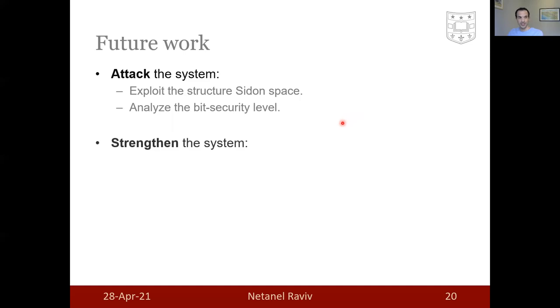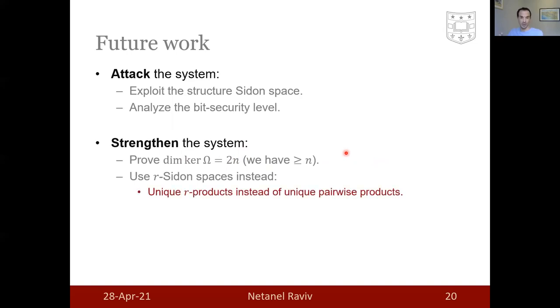Another venue, which we have a few suggestions, is to strengthen the system. First of all, to understand where these extra n dimensions in the kernel are coming from. Second, is to use a generalization of Sidon space, that's called R-Sidon space. In an R-Sidon space, you have a unique R product, instead of a unique pairwise product. In other words, a Sidon space is a 2-Sidon space. Some constructions are known in the same paper, but we have a few years ago.